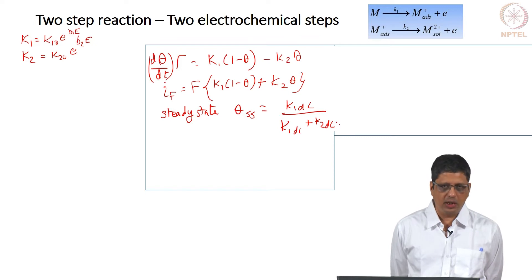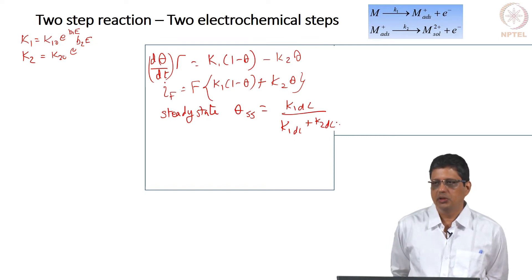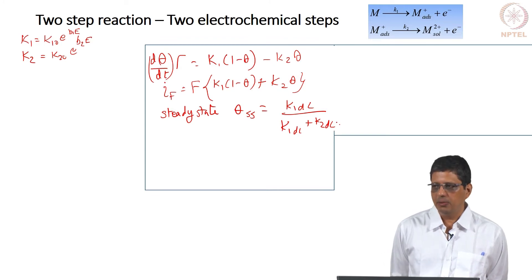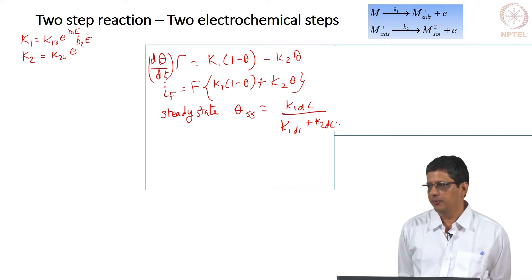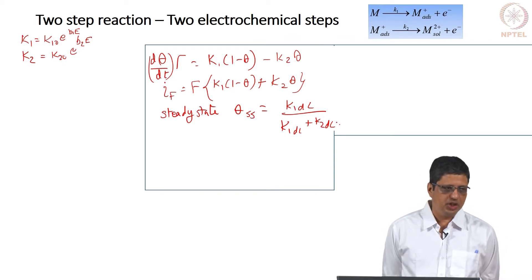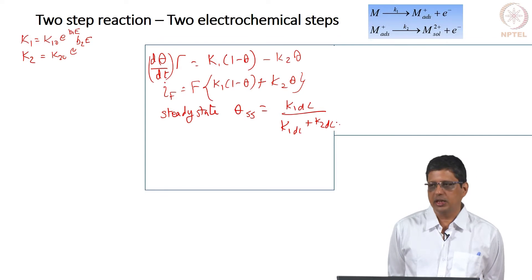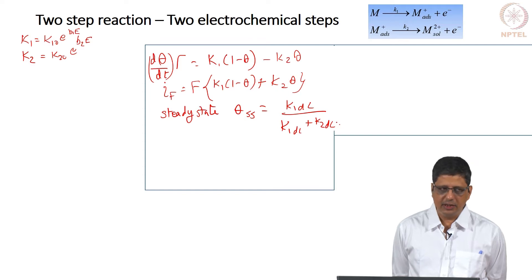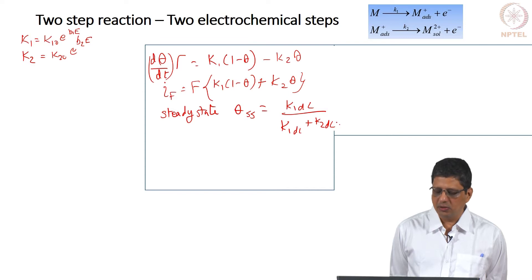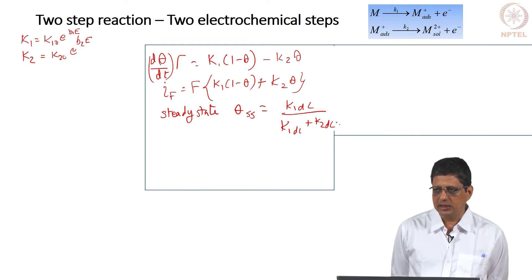In the second step, the ion loses one more electron and goes into solution — like copper becoming copper-plus still on the surface, then copper-plus becoming copper-2-plus and going into solution. So k2 depends on potential and contributes to the current. The mass balance equation will look similar: gamma · d(theta)/dt = k1·(1−theta) − k2·theta, but now k2 is a function of potential and the faradaic current has one more additive term.